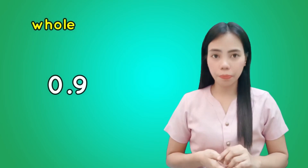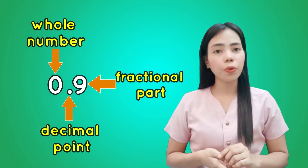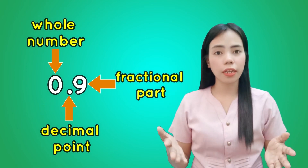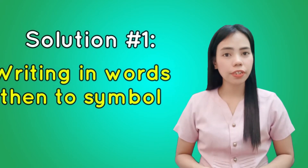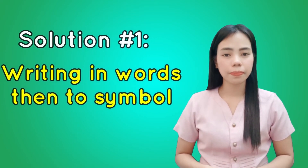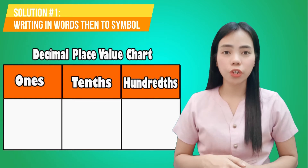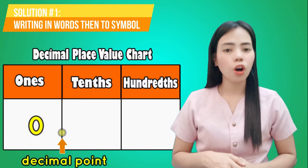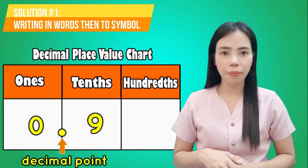Remember, we defined a decimal number in our previous lesson as a number whose whole number part and fractional part are separated by a decimal point. There are many ways to rename 0.9 in fraction form. The first solution is by writing in words, then to symbol. The decimal place value chart will help us find the correct place values of the digits in the decimal number.